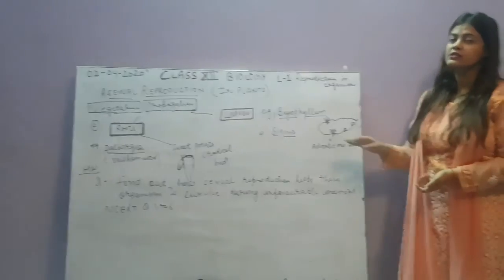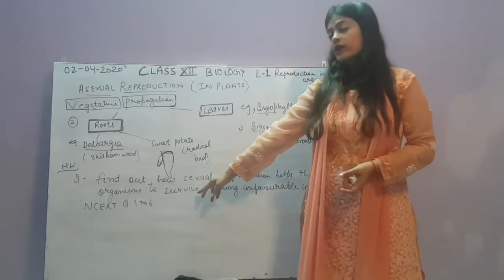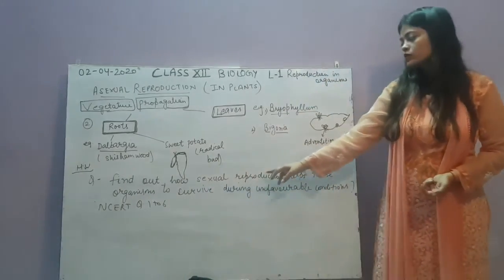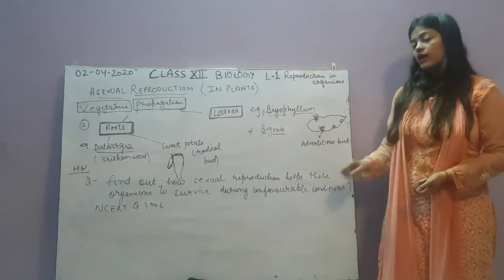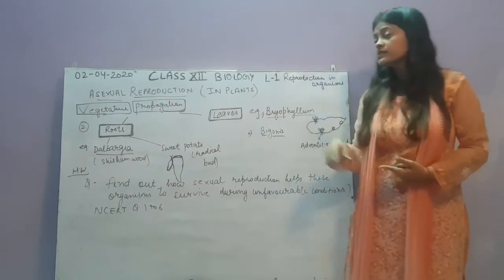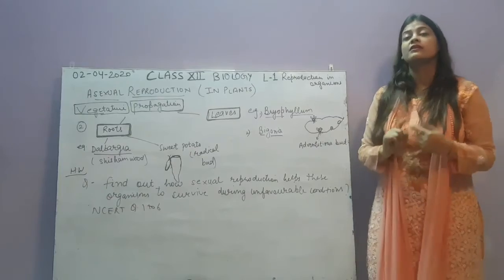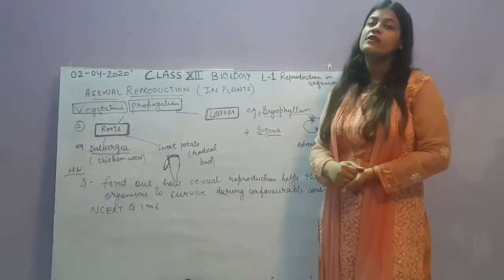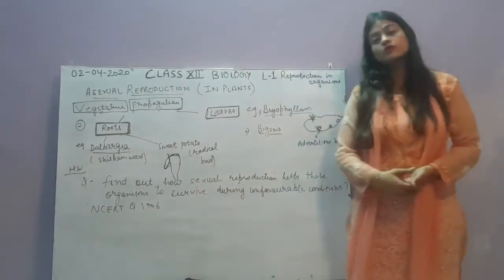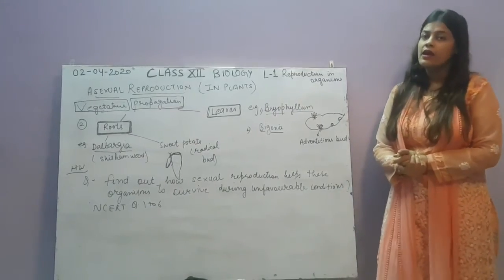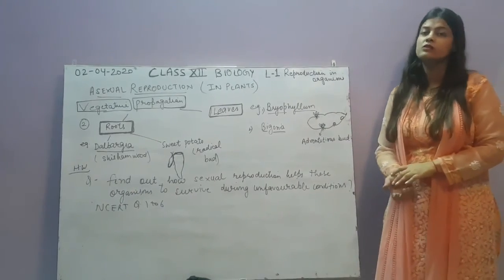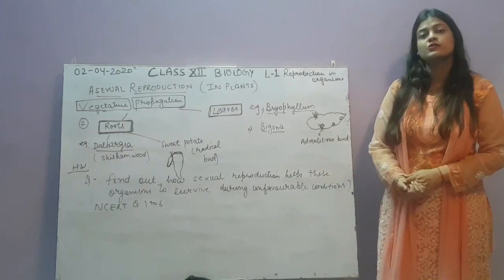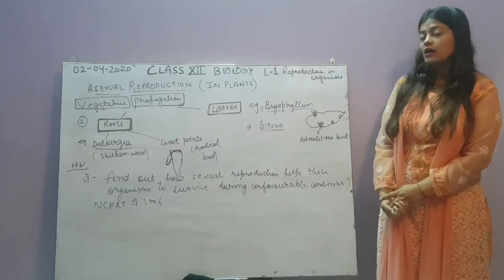This completes the topic of asexual reproduction. Here is a homework question: find out how asexual reproduction helps organisms survive during unfavorable conditions, since asexual reproduction takes place only under favorable conditions. You also need to solve NCERT questions — question numbers 1 to 26 from the back exercise. Write the answers in your fair notebook and we will discuss them in the next video. Thank you.